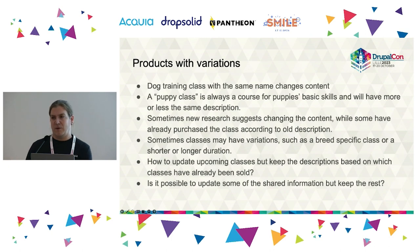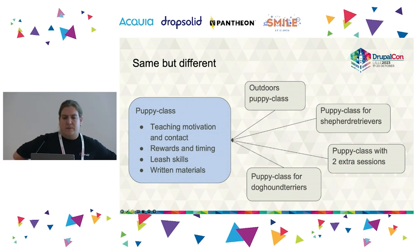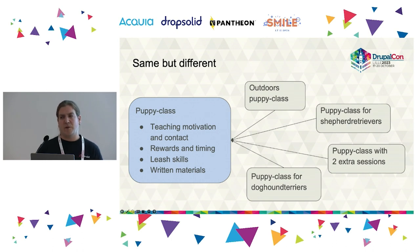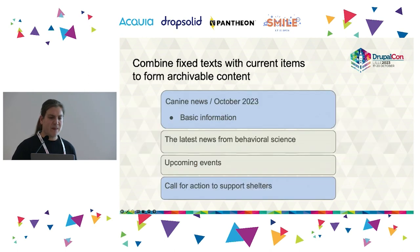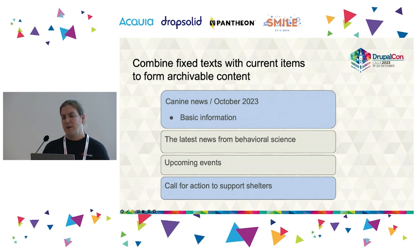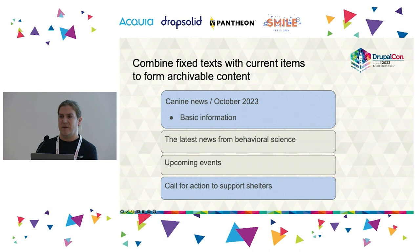There can be variations in dog training classes — breed-specific, or longer or shorter duration. The question is how to update future classes while keeping old information in old products, and whether it's possible to update some content with shared information while keeping other content the same. Sometimes we want to combine fixed text with variable content, such as a newsletter template with fixed content and a pulled-in view, stored in an archivable way so the same parts don't change.